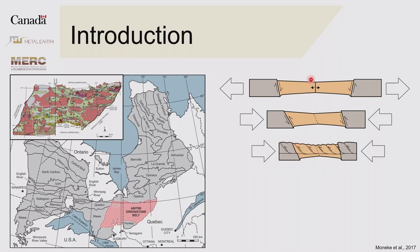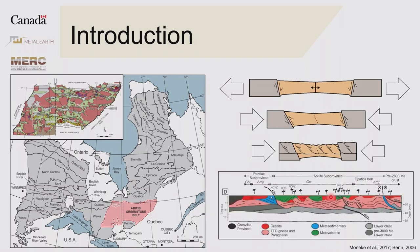Shown here is the lithoprobe cross-section, where you have fracturing in the upper crust, it gets more ductile, and then you have the lower crust that doesn't really have any thrusting or major deformation that would have messed up these features in the moho topography.